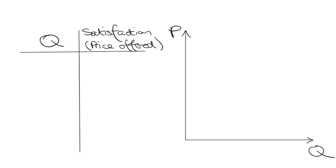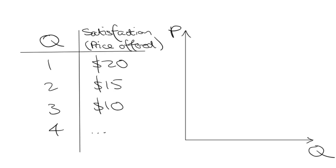What is the law of diminishing marginal utility? Well, imagine going to a burger joint really hungry. Because you're hungry, you're going to be willing to pay a high price for the first burger. After that first burger, you're going to be less hungry, so you'll get less satisfaction from the next burger and you'll be willing to pay a lower price. After that second burger, you'll pay an even lower price for the third, and so on. This demonstrates the law of diminishing marginal utility.